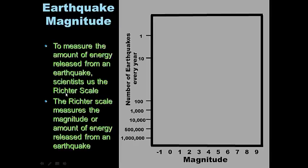Earthquake magnitude: to measure the amount of energy released from an earthquake, scientists use the Richter scale, invented by Charles Richter, a seismologist. The Richter scale measures the magnitude — or amount of energy — released from an earthquake. The chart shows number of earthquakes per year on one axis and magnitude on the other.